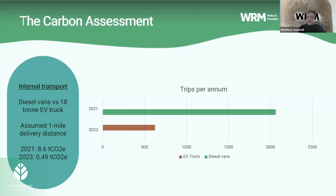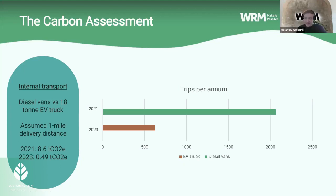In terms of internal transport, we collected data on trips made internally after supplier delivery via our EV 18-tonne truck. This comparison is between the 2021 situation when Dolly Lane was set up but two diesel vans were used, versus now using electric vehicles. Previously there were over 2,000 trips made to each site internally, but with the introduction of a larger EV vehicle this has been reduced to approximately 600–650 trips, saving approximately 8 tonnes of carbon.